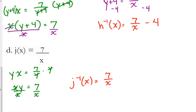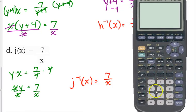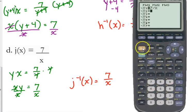So that's interesting. The inverse and the original are the exact same function. There's a reason for that. Let's look at that. Let's look at your calculators and put 7 over x into your y equals. And let's look at the table of values.